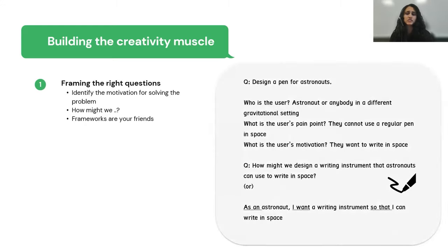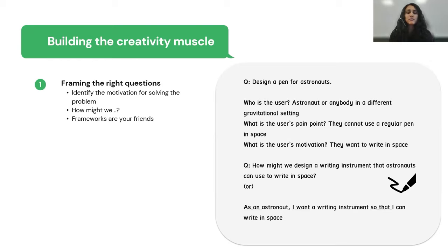Consider this question: how would you design a pen for astronauts? On the surface level, one might interpret it as we need to design a pen that can write upside down in zero gravity. If you think deeply, though, we can reframe the question first by asking: who is the user? The astronaut.